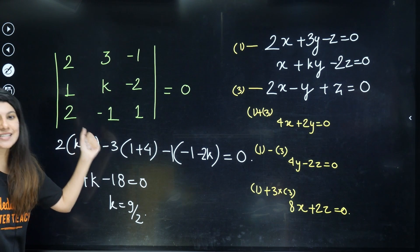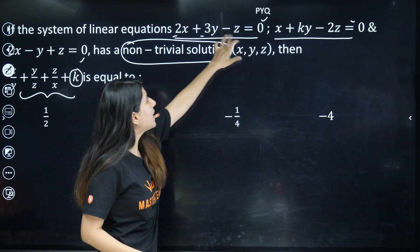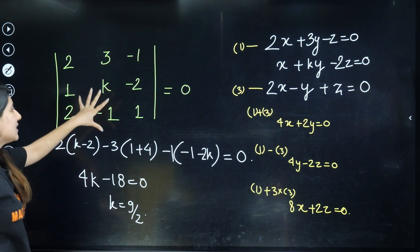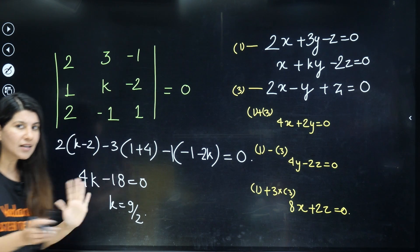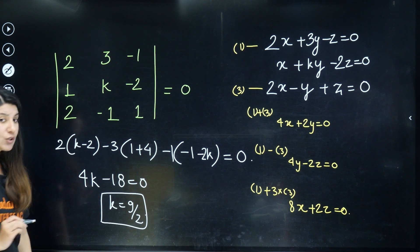So we have already formed this determinant. This determinant is formed by coefficients 2, 3, -1, 1, k, -2, and 2, -1, 1 you can see. Just solve this determinant using conventional method and get the value of k. So k is coming out as 9/2.